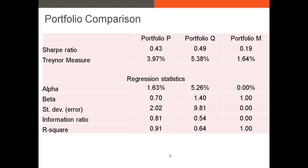Now let's take a look at an example where we compare several portfolios: P, Q, and M. Portfolios P and Q are actively managed funds, while portfolio M is the market portfolio — think of it as the S&P 500. Notice that the market portfolio's alpha is zero and its beta is one. Its standard deviation and information ratio are zero, and its R-squared is one. All of these make sense because the market has an average beta of one and won't, on average, outperform itself, so alpha is zero and R-squared is one.